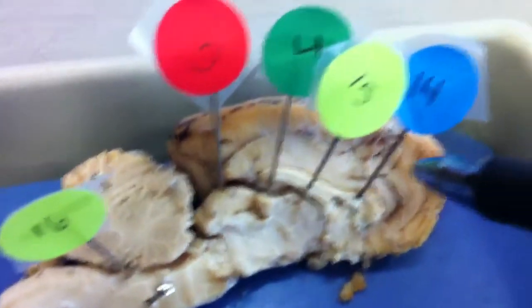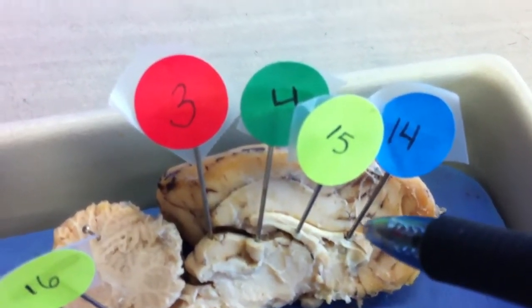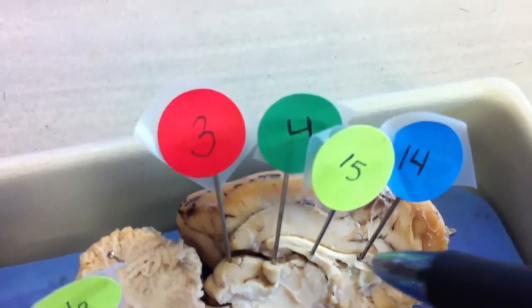We have the corpus callosum, which is 14, right there. 15 will be the fornix.